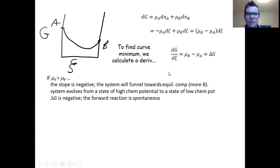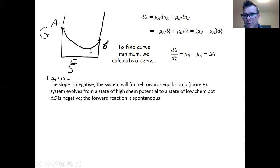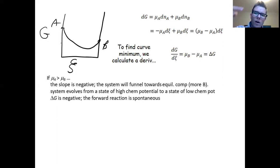Consider a couple of scenarios. First, if μA is greater than μB, this slope is negative — we're in the left region of the graph — and the system will funnel toward the equilibrium composition, making more B. The system evolves from a state of high chemical potential A to one of lower chemical potential B. If μA is bigger than μB, you get a negative delta G, which corresponds to a spontaneous forward reaction. These are all internally consistent.